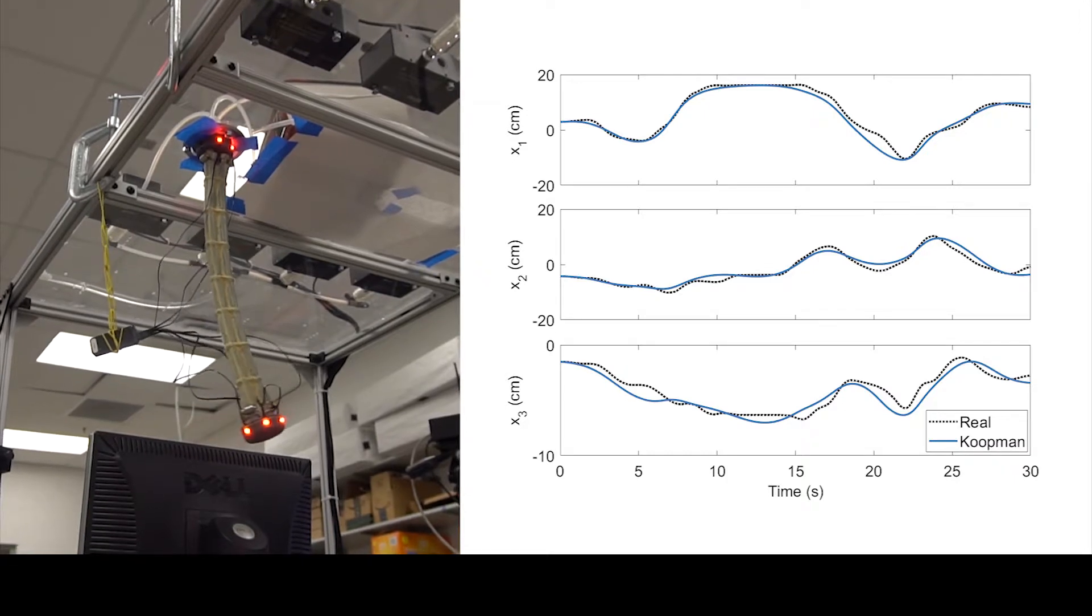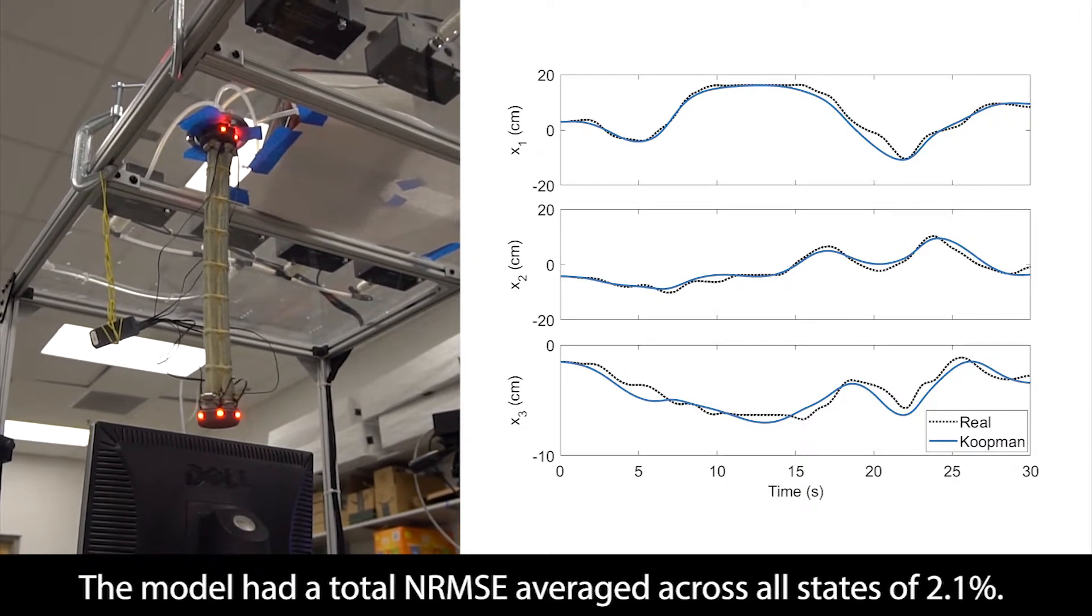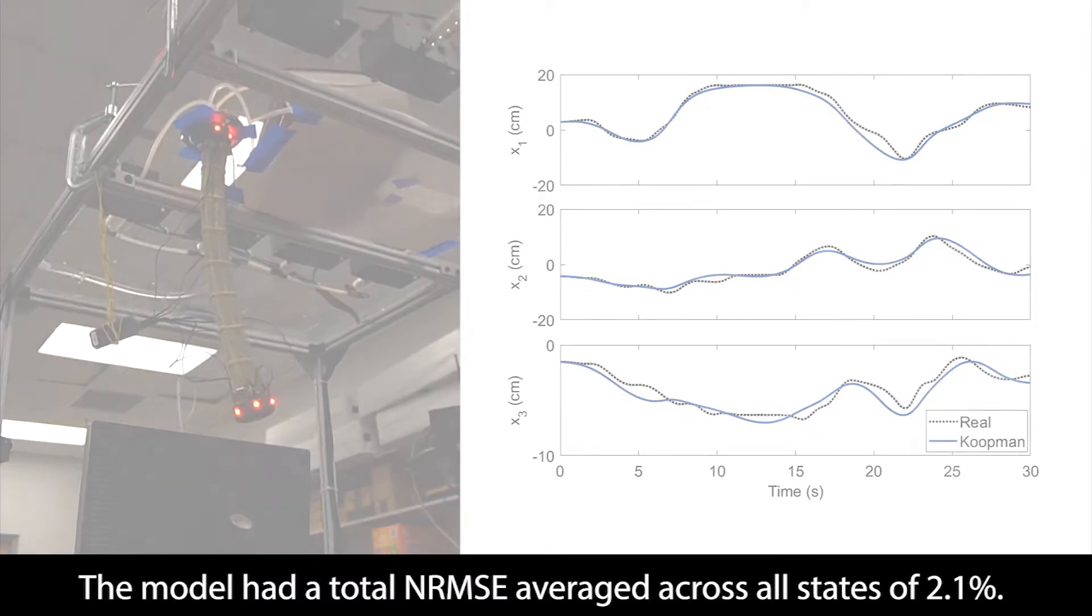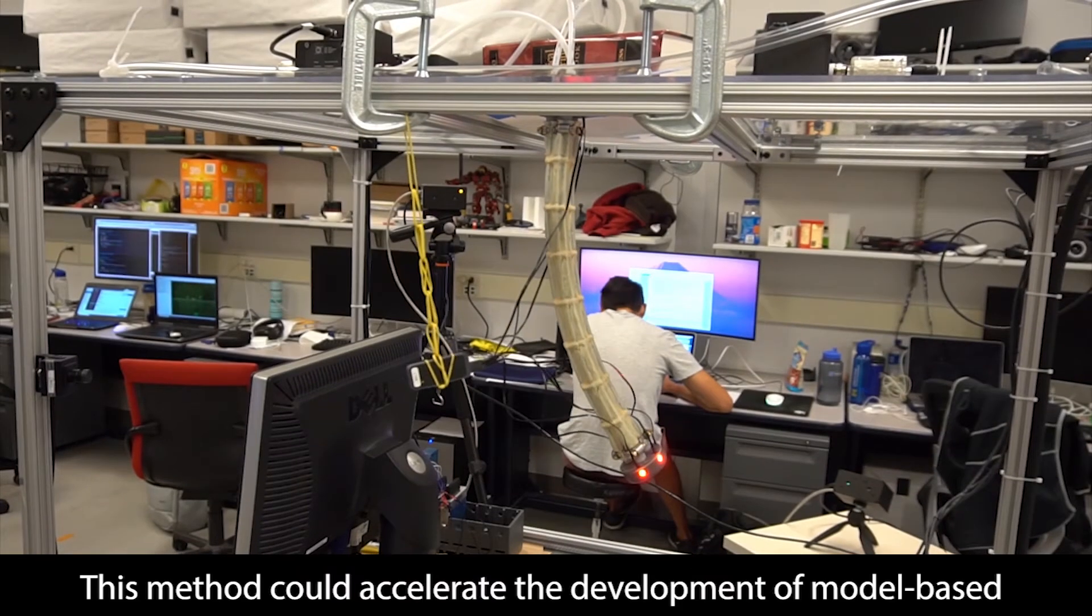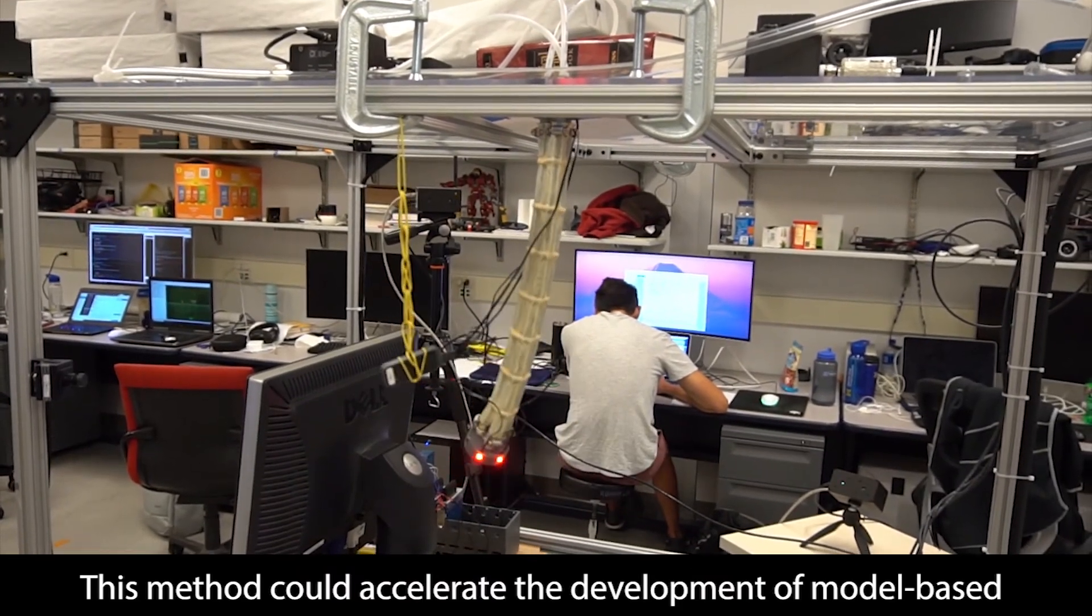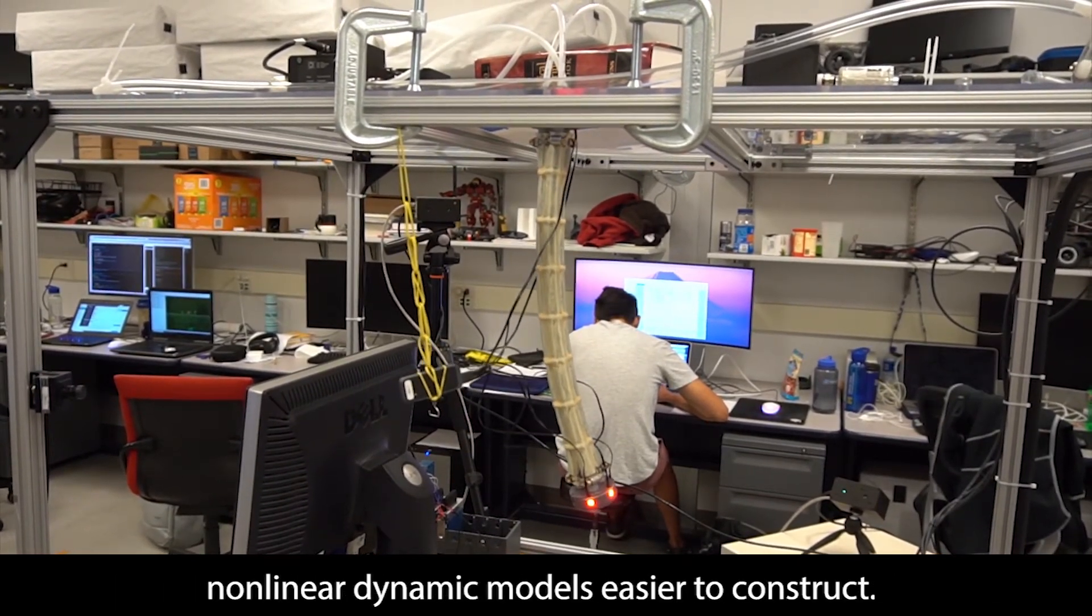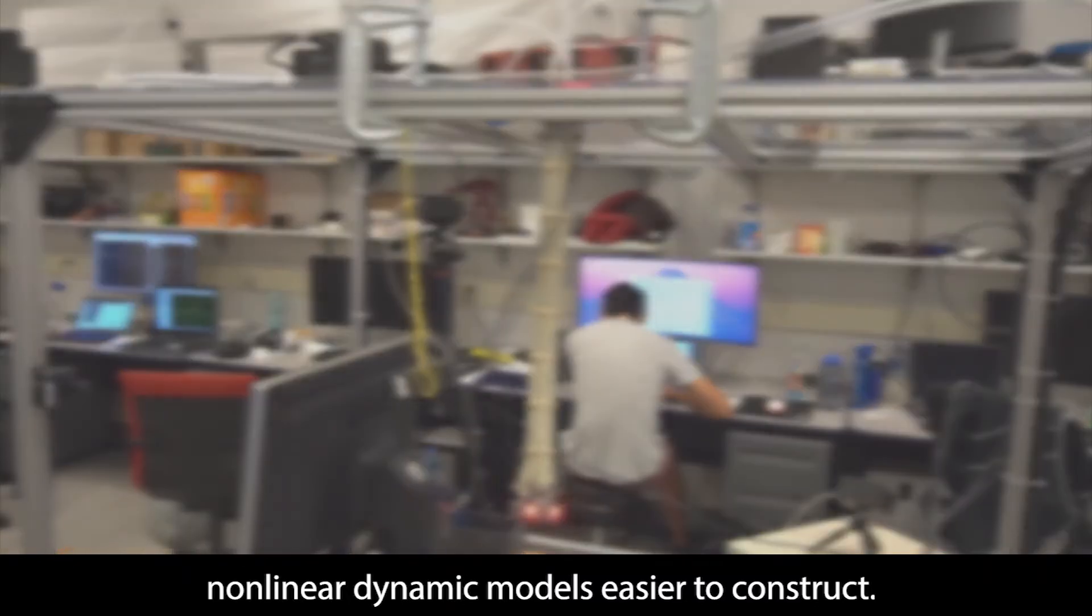The model had a total normalized root mean squared error averaged across all states of 2.1%. This method could accelerate the development of model-based control strategies for soft robots by making accurate nonlinear dynamic models easier to construct.